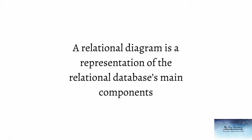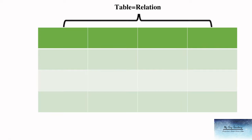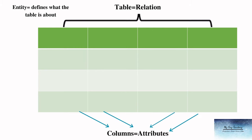A relational diagram is a representation of the relational database's main components. The two-dimensional table in the relational model is called a relation. An entity is anything — a person, a place, a thing, or an event — about which data are to be collected and stored; it represents a particular type of object in the real world. The columns are called attributes and they describe the particular characteristics of the entities. For example, an employee entity can be described by the employee's first name, last name, date of birth, address, and so on.